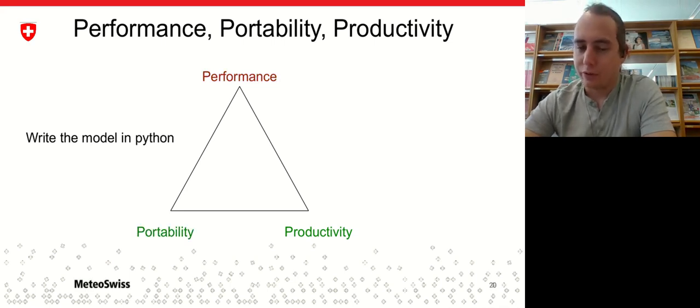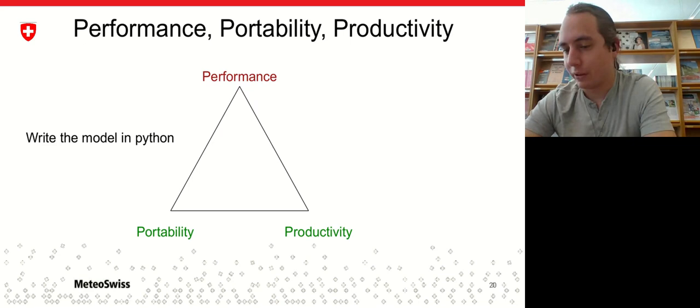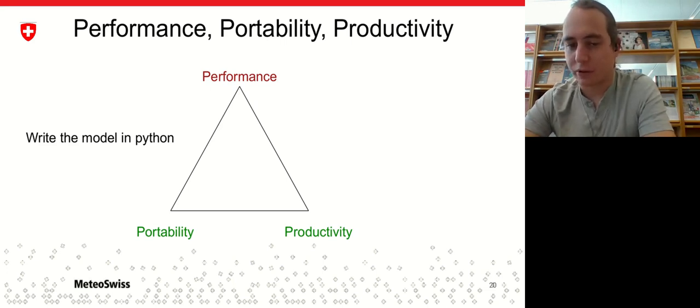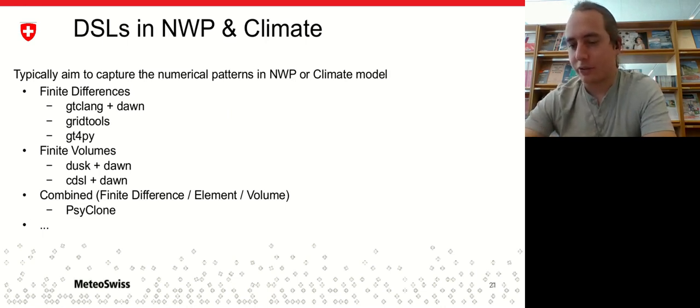On the other hand, if you were to write your model down in Python, you would be extremely productive because Python is quite a concise language. You would be extremely portable because you can run your code everywhere where there exists a Python interpreter, which is everything from smartphones to supercomputers. But you completely gave up on performance because Python with the standard interpreter can even only run in serial.